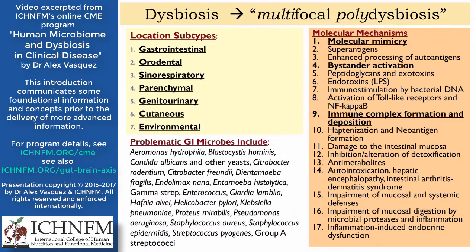On this slide I'll provide more terminology and a bit of the history of my program. We first started talking about dysbiosis many years ago. In approximately 2006, I published an article in a textbook called Integrative Rheumatology, wherein I discussed — I believe for the first time — the concept of multifocal polydysbiosis. Typically in the mid-1990s, when we talked about dysbiosis, we pretty much exclusively focused on gastrointestinal dysbiosis.